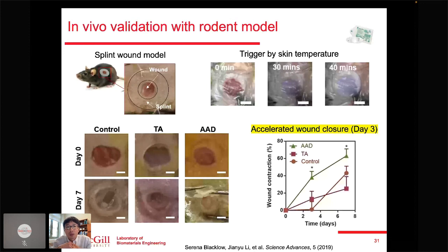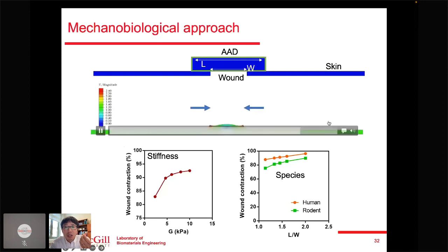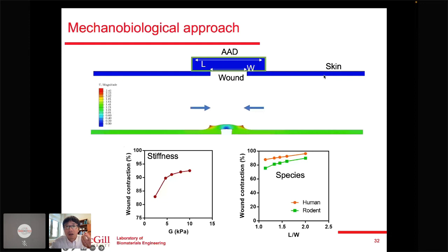The wound closure process is so fast we hypothesize it is largely a mechanical rather than biological process. We carried out finite element simulation modeling the skin mechanics and temperature-responsive behavior of the bioadhesive, capturing the wound contraction behavior observed in the animal study. We further project this principle can be applicable to human skin.